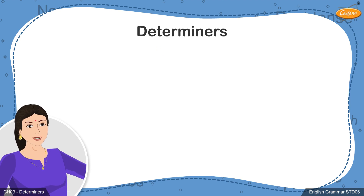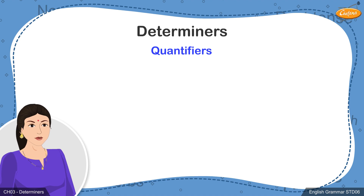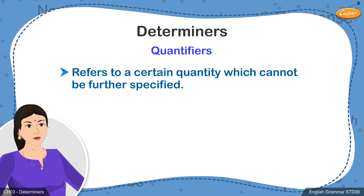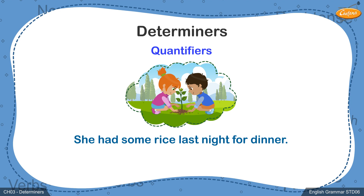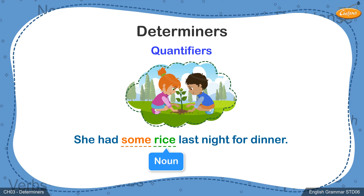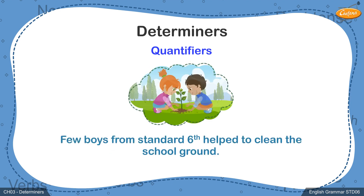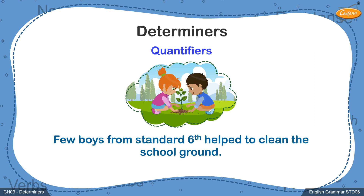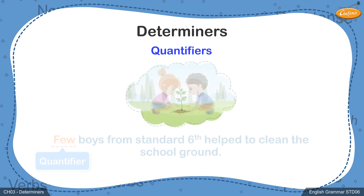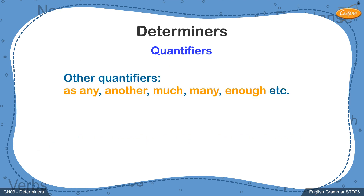Students, lastly, we will be talking about quantifiers as determiners. Quantifiers are words which refer to a certain quantity which cannot be further specified. In this sentence, 'She had some rice last night for dinner', the word 'some' refers to the quantity of rice eaten by the girl — the word 'some' becomes a quantifier. Notice that the same word tells us more about the noun 'rice' and therefore becomes a determiner. Similarly, in the 2nd example, the word 'few' appears before the noun 'boys' and tells us about the quantity of boys who helped in cleaning the ground. Hence, 'few' here becomes the determiner. Quantifiers such as any, another, much, many, enough can also function as determiners in sentences.